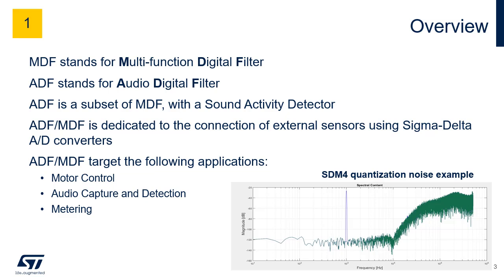ADF and MDF target the following applications: Audio Capture and Detection, Metering. In addition, MDF can be used for motor control. The figure on the right shows an example of the spectrum aspect of a sine wave converted by a fourth-order single-bit Sigma Delta ADC. The main goals of MDF and ADF are to keep the lower frequency part — here the signal — up to 10 kHz, to remove the quantization noise and to reduce the sampling rate.